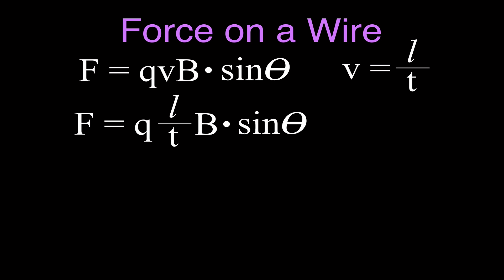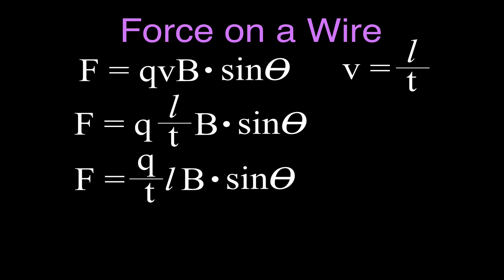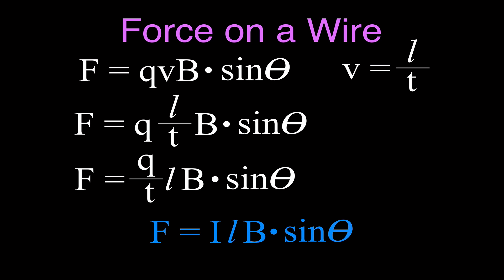So now we have the force on the wire is equal to Q times the length of the wire divided by the time, times the magnetic field, and sine of theta is the angle between the wire and the magnetic field. Rearranging, the force is equal to Q divided by T times length times the magnetic field. And Q divided by T is simply the current. So the equation for the magnitude of the force on a current-carrying wire in a magnetic field is: force equals current times the length of the wire times B, the magnetic field strength, times the sine of the angle between the wire and the magnetic field.